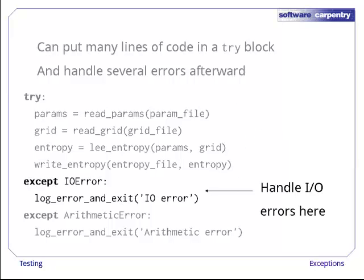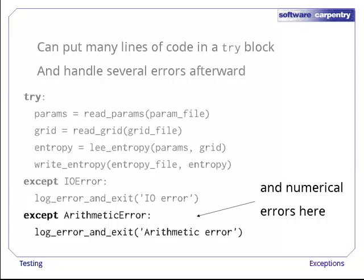If it's an IOError, Python jumps into the first error handler. If it's an ArithmeticError, Python jumps into the second handler instead. It will only execute one of these, just as it will only execute one branch of a series of if, elif, and else statements.